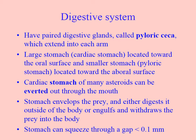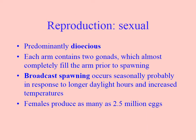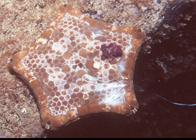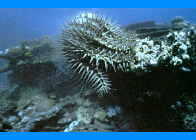They're generally dioecious — that means two sexes — broadcast spawning, and females can produce as many as two and a half million eggs. Starfish when breeding can produce massive amounts of offspring and bloom very quickly. Here's a picture of a starfish releasing sperm, and here's another one. They go into this classic breeding pose — this is a crown of thorns starfish releasing eggs.